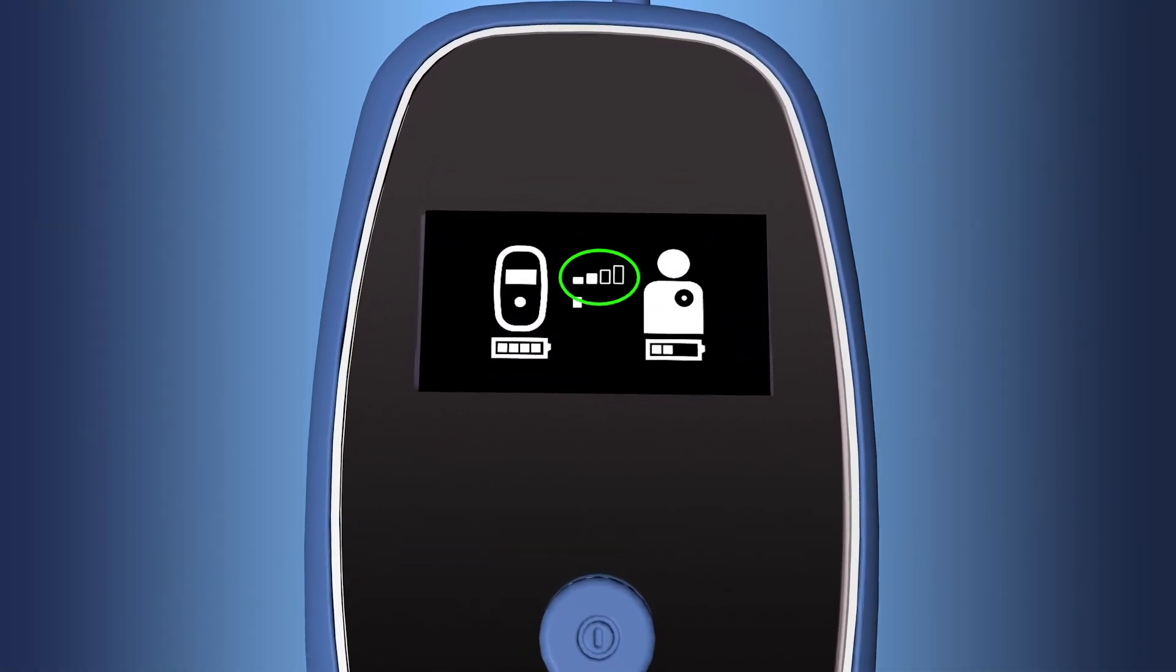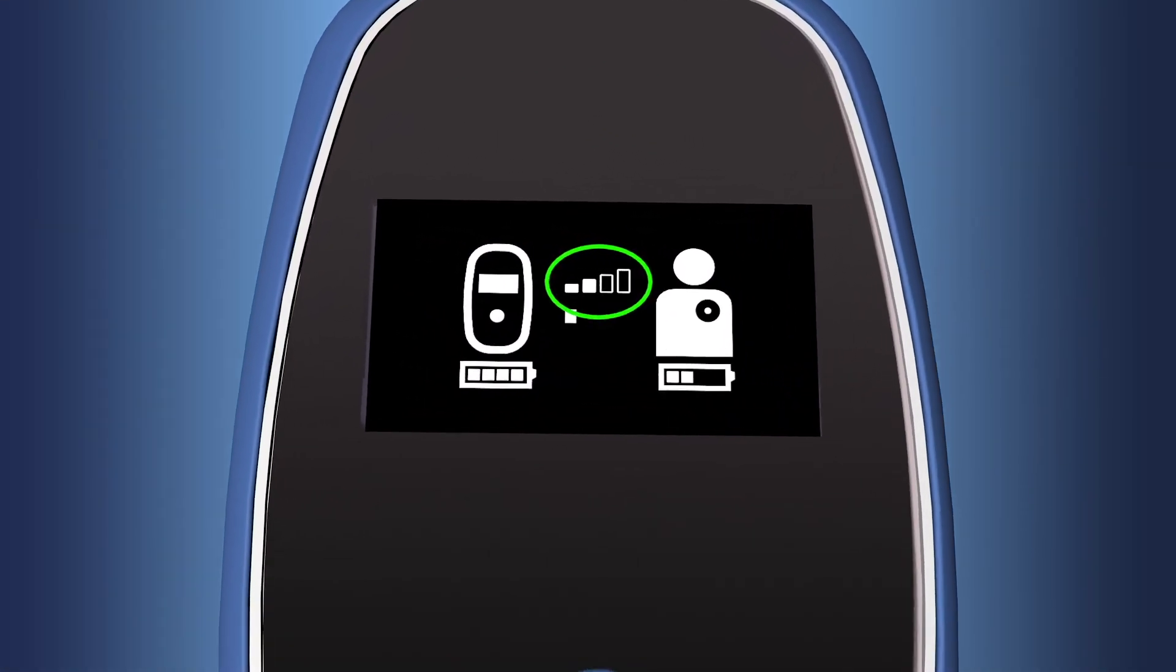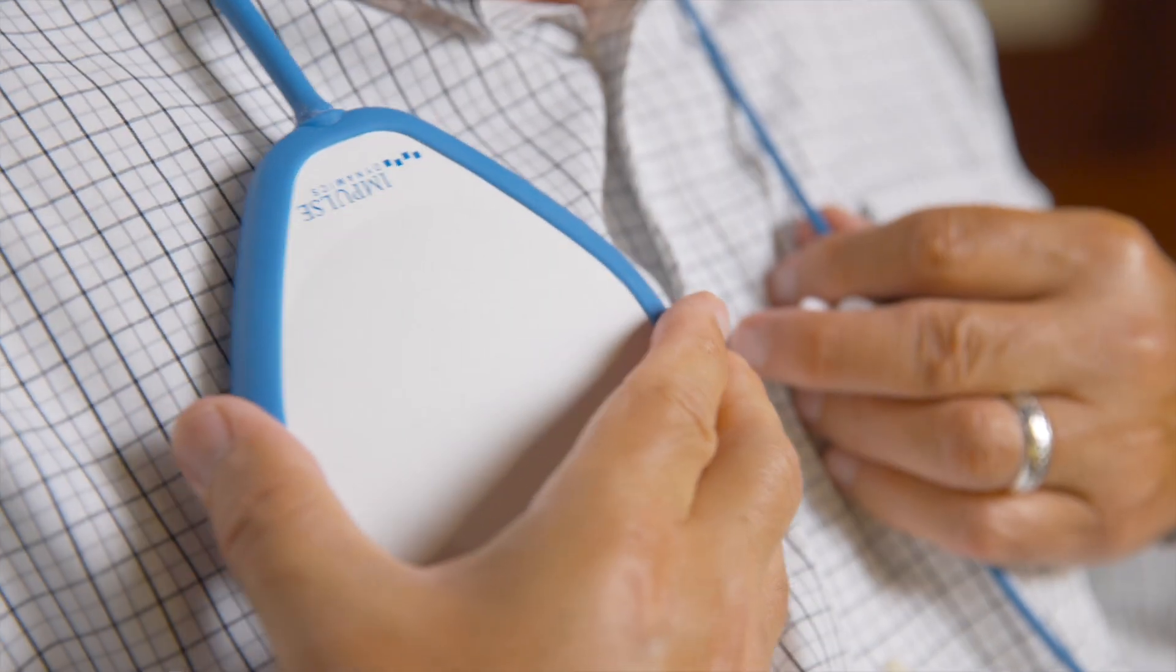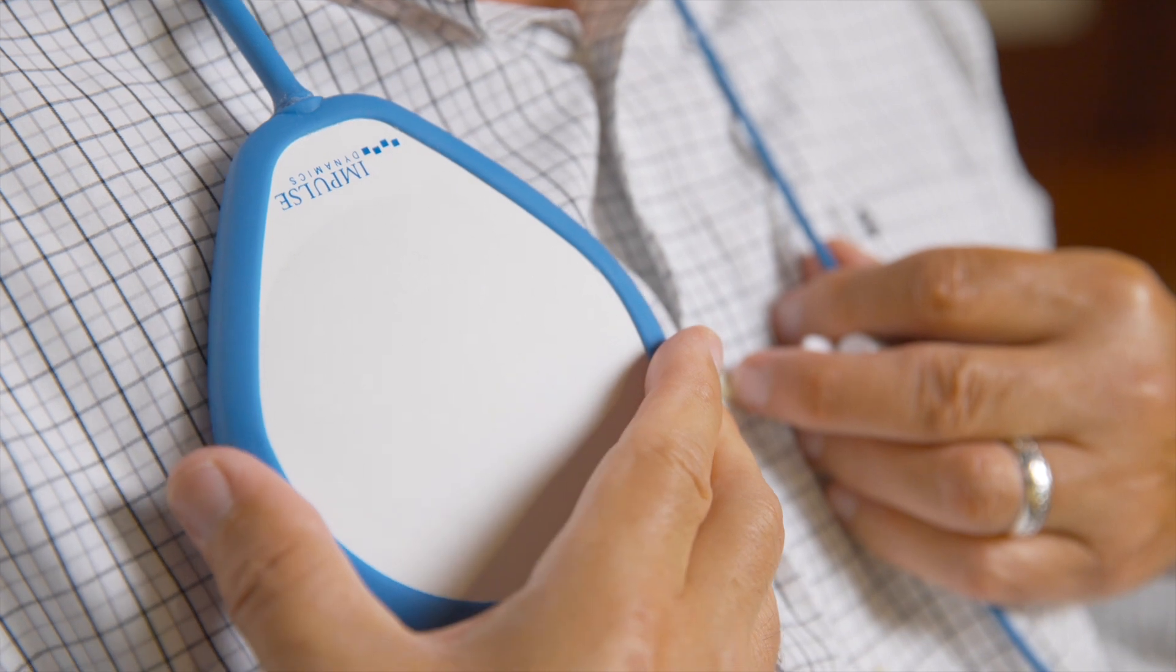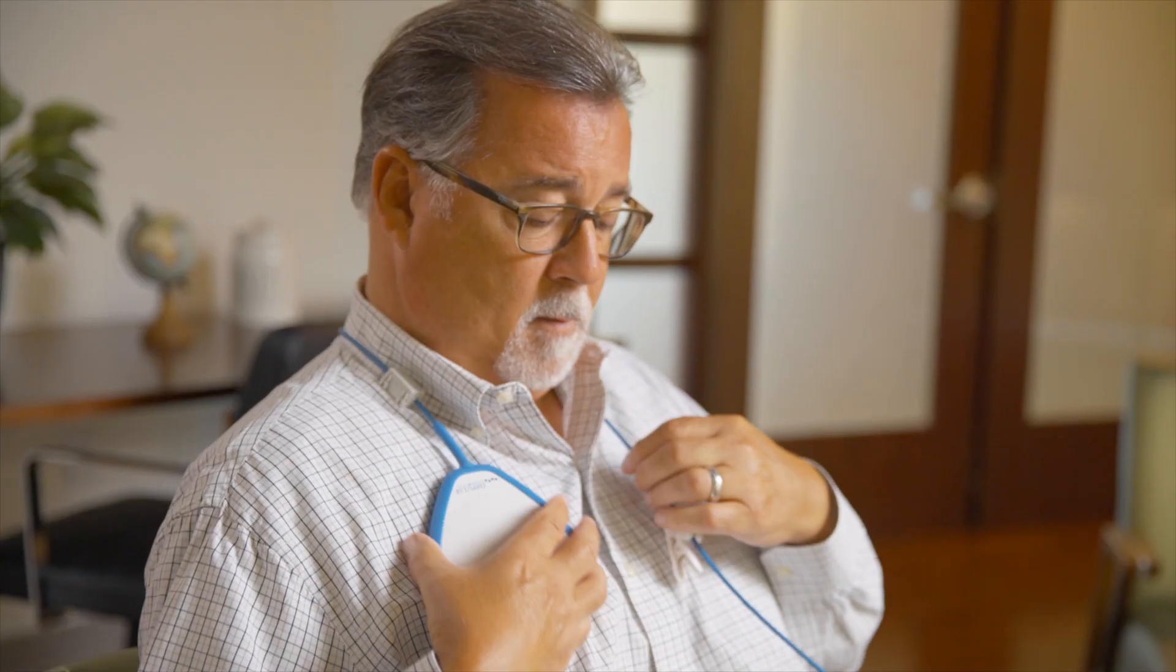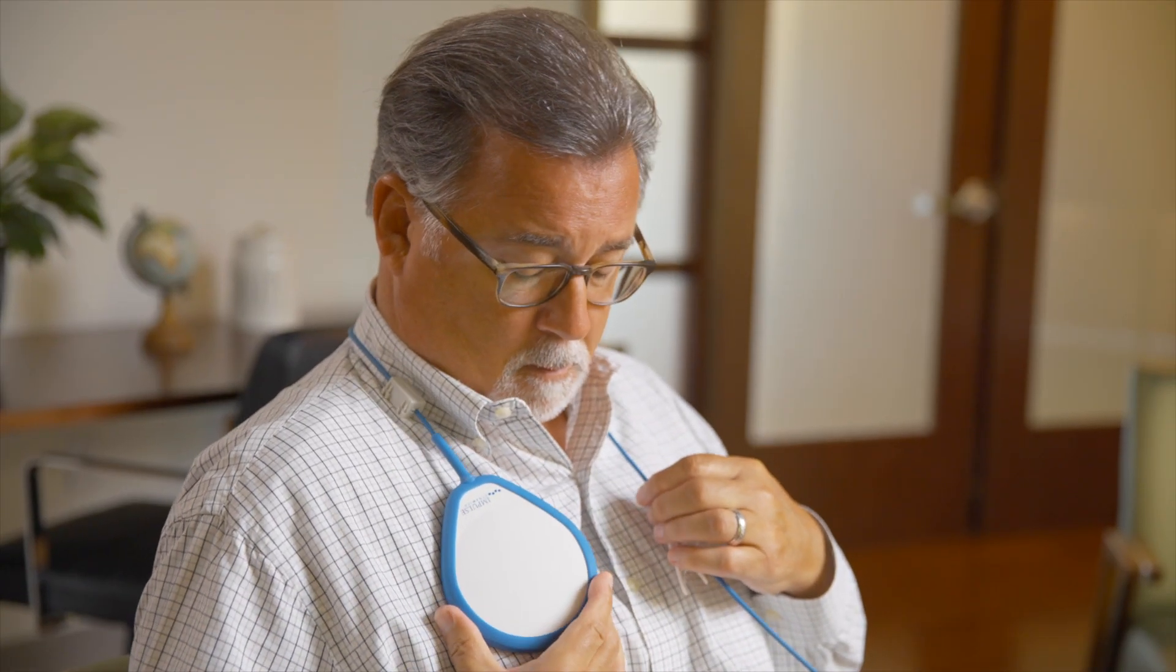The bars above the moving arrow show the signal strength between your charger and Optimizer. Slowly move the blue and white paddle, pausing after each movement until you have three or four filled bars. If the charger displays four empty bars and begins beeping, the paddle will need to be repositioned. Move the paddle until a better connection is made.